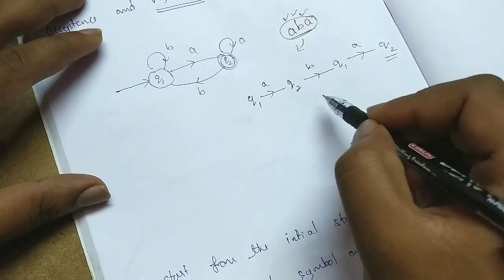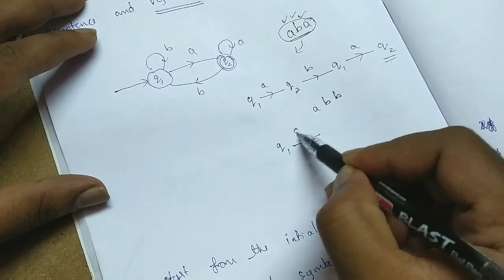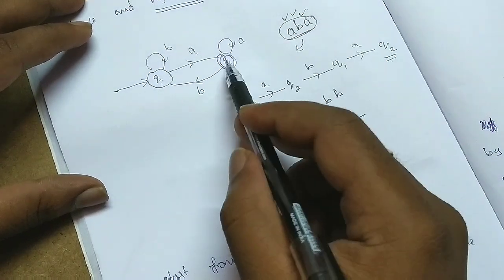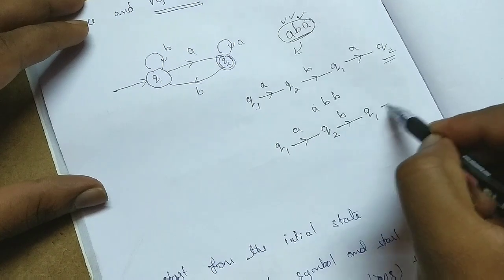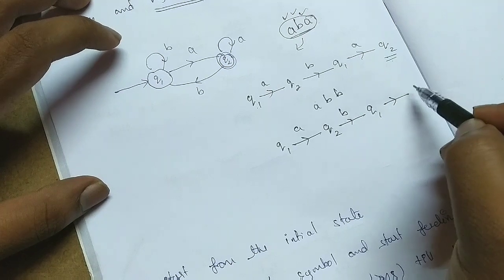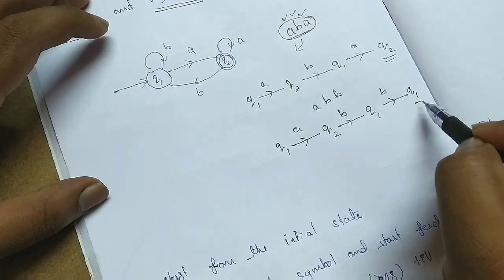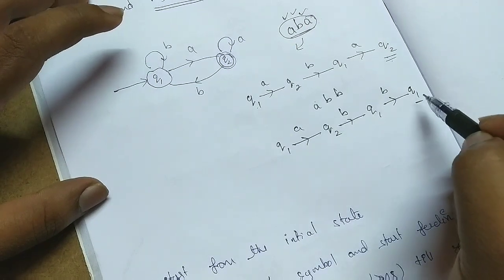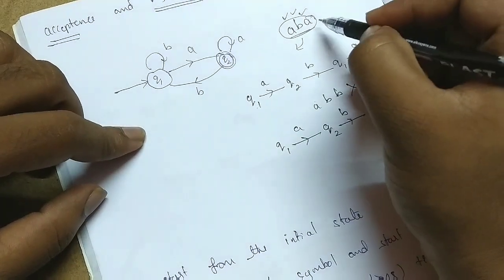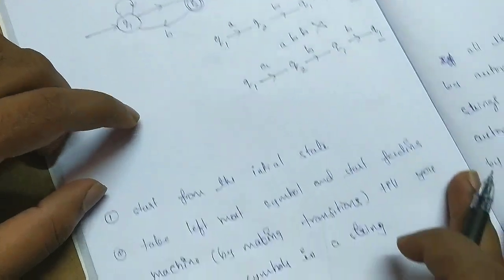Let me take another string: 'a', 'b', 'b', 'a'. I do the transitions: with 'b' from Q2 I go to Q1, then from Q1 with 'b' I do a self-loop and remain at Q1. Now at the end of the string the control is at Q1, which is not a final state. So I can say this particular string is rejected by the finite automata. The first string was accepted; this string is rejected.